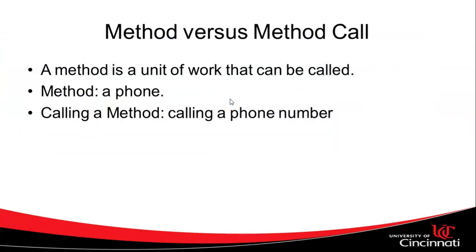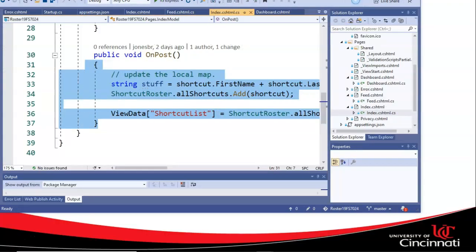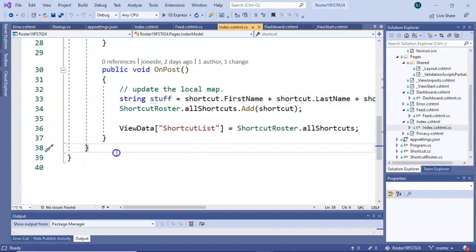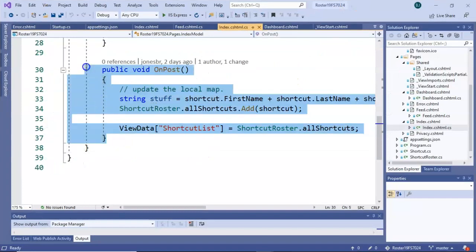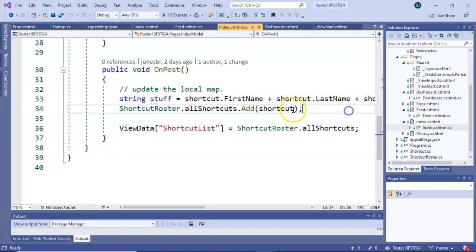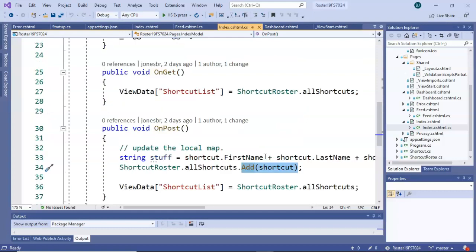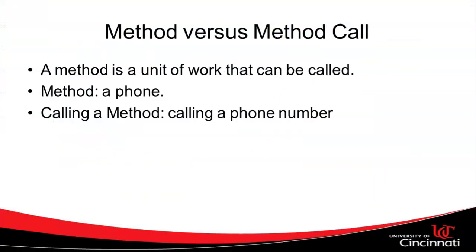So one thing to be careful of though, people often confuse method and method call, especially when they're new to programming. So take a look at what I'm highlighting here. This is a method. Take a look at what I'm highlighting here. This is a call to a method or a method call.